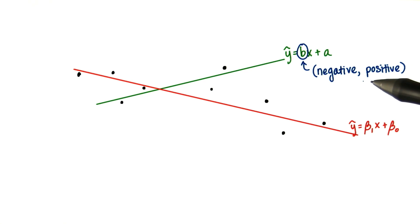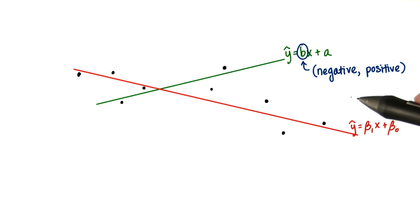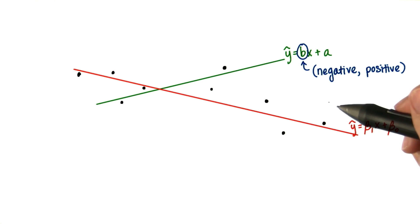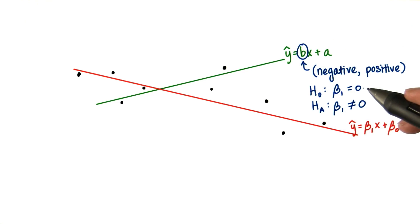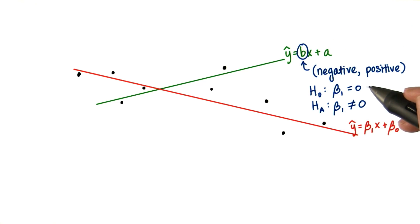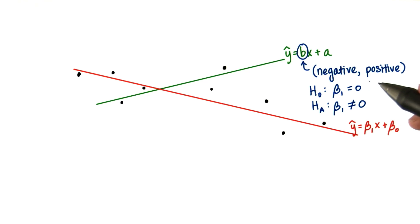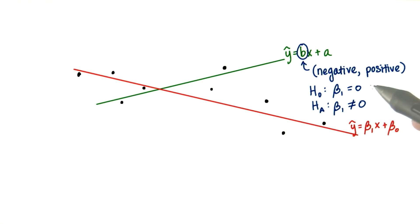Therefore, if we run a two-tailed hypothesis test for whether or not the slope is equal to 0, we would fail to reject the null. Meaning there's no evidence that there's a linear relationship between x and y based on that sample.